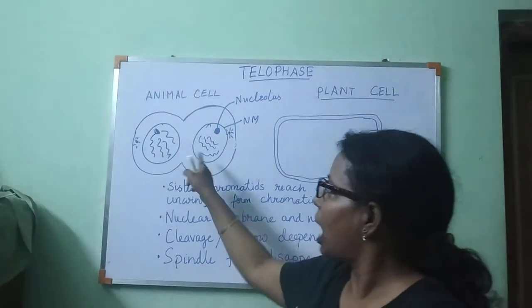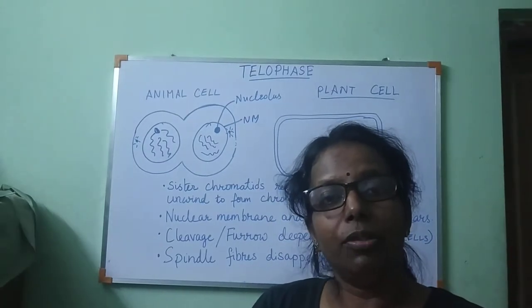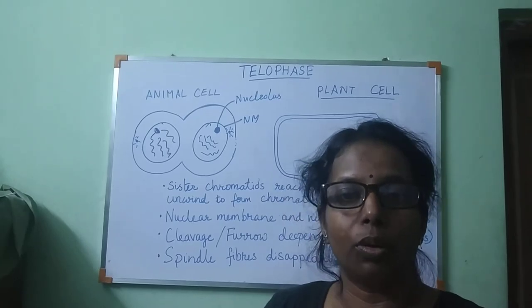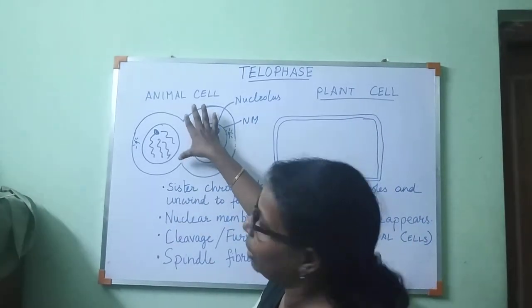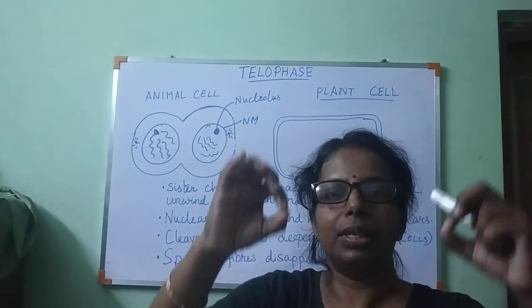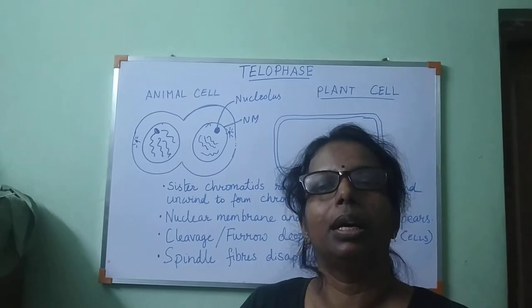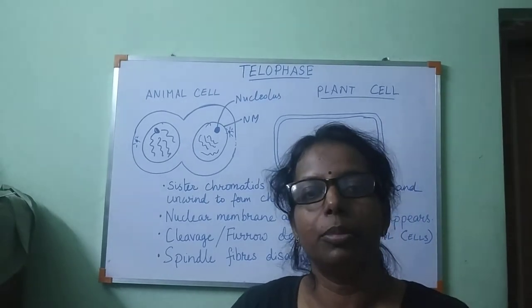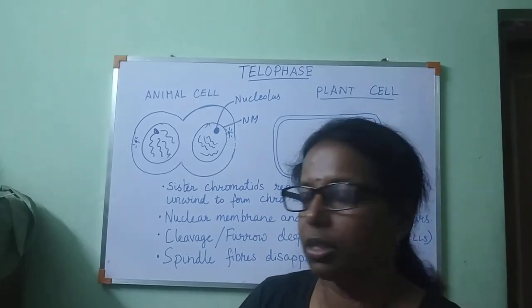The division of DNA has already taken place, and this is called karyokinesis. Now the furrow will become deeper and deeper, and when the two cells separate, that is accompanied by the division of the cytoplasm, which is known as cytokinesis. We will look into that after some time.